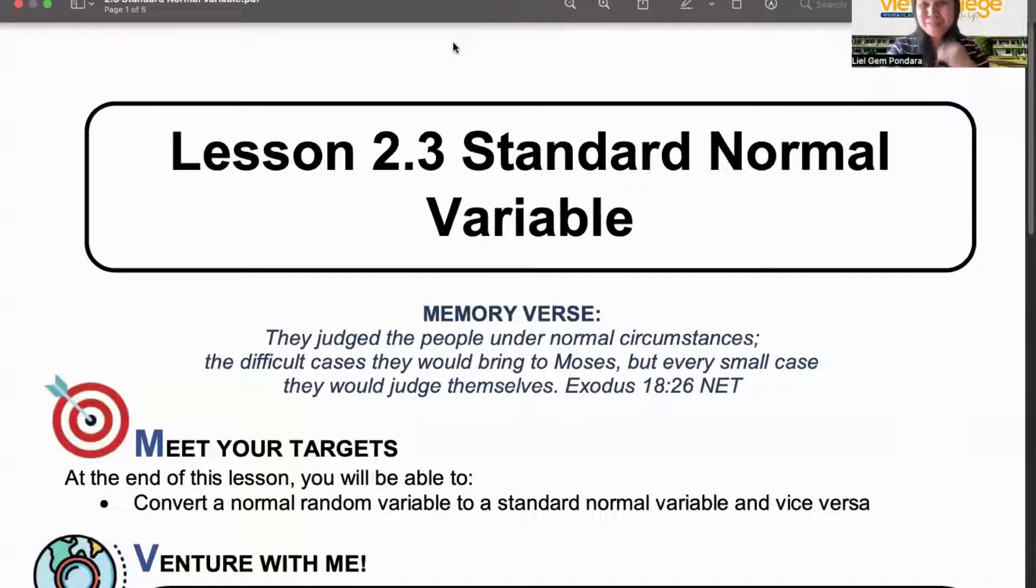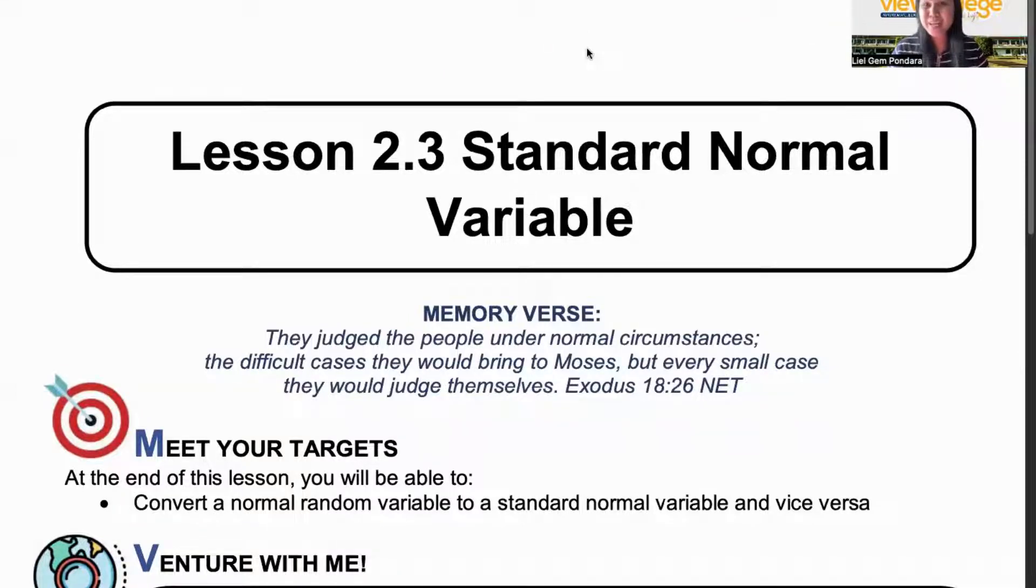Once again, good morning and welcome to our stat and prob class. Today, we are going to have lesson 2.3, and it's about the standard normal variable. Our memory verse today is found in Exodus 18, verse 26. It says, they judged the people under normal circumstances, the difficult cases they would bring to Moses. But every small case, they would judge themselves. The keyword here is normal. So in your boosters, you're asked to define what are these normal circumstances.